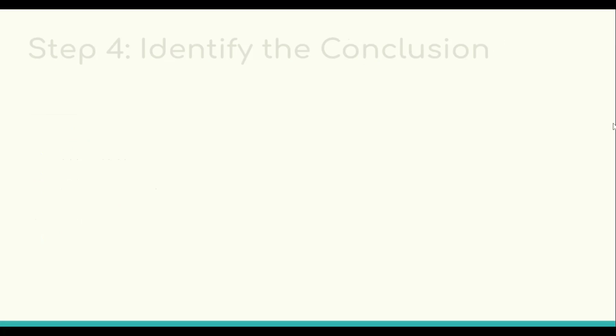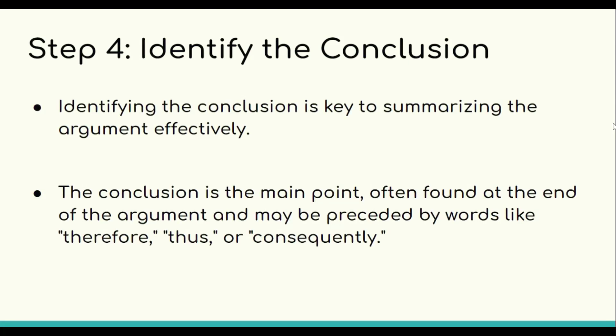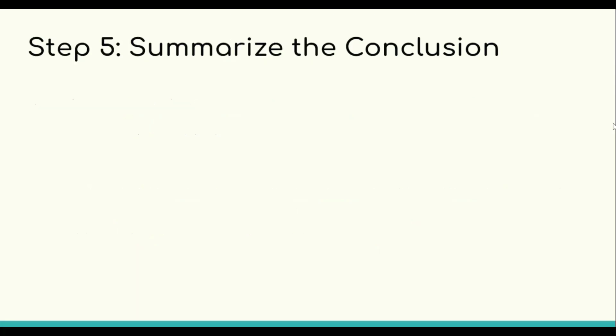Step four is to identify the conclusion. In any argument, the conclusion is the key takeaway — the author's big idea. You need to determine the main conclusion based on the premises, which may be preceded by trigger words like 'thus,' 'therefore,' or 'consequently.' Once you identify the conclusion, you can move on to summarizing it in your own words.